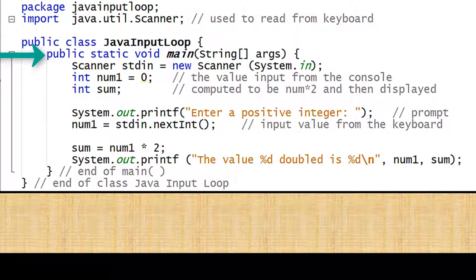The class name is JavaInputLoop and the program will be in a file named JavaInputLoop.java. Here is the start of the executable code defined by public static void main(String[] args). Create the scanner object. I named it stdin. Declare two variables num1 and sum. num1 will be used to hold the integer read from the keyboard. Sum will hold the value from num1 multiplied by 2. A System.out.printf command displays the prompt message. num1 equals stdin.nextInt(); is used to read an integer from the keyboard. Once we have an input for num1 it is doubled and assigned to the variable named sum. Another System.out.printf statement displays the original value and the value that has been doubled.